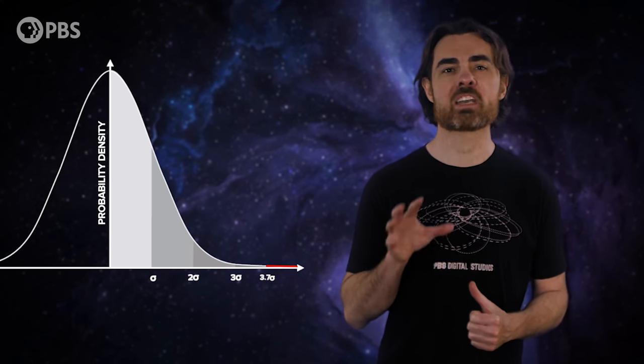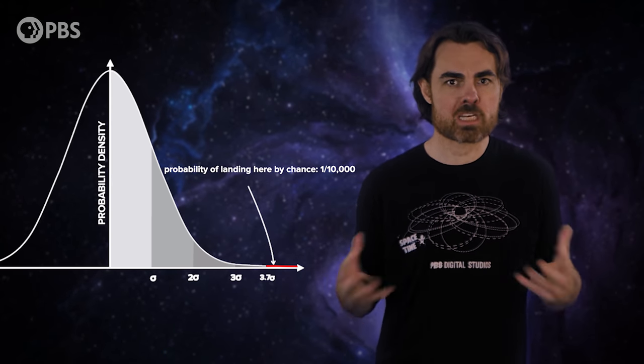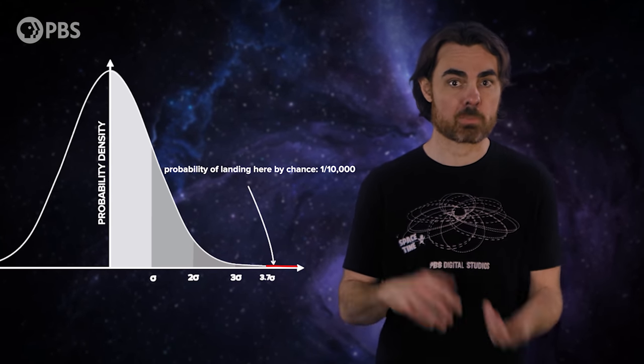Until now it had been measured precisely enough to claim a 3.7 sigma difference compared to theory. That was at Brookhaven National Laboratories in 2001. There's roughly a 1 in 10,000 chance that random fluctuations could lead to that degree of difference just by chance.